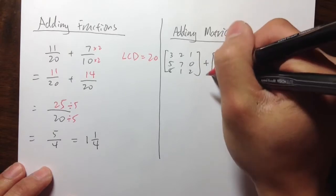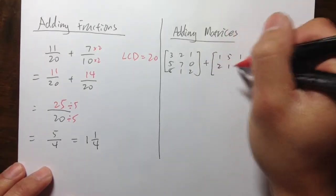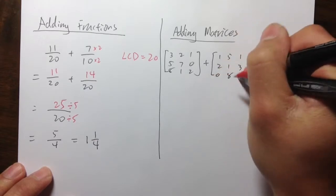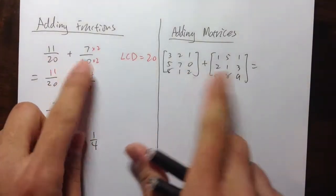And then let's say I want to add another matrix. That's a 1, 5, 2, 1, 2, 1, 3, 0, 8, 9. And let me pause here for a minute. Let me ask you guys this question. Which one do you think is more complicated? Matrices or fractions?